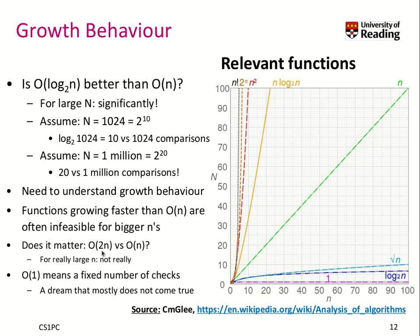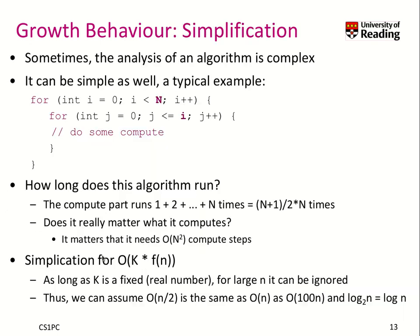It doesn't matter much if an algorithm is 2n compared to n — that's just twice as much, just a constant. It doesn't matter if I have 100 versus 101 elements; in any case it's just twice. Therefore, in this notation we typically get rid of such constant factors.